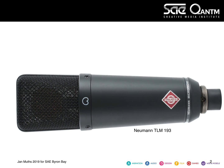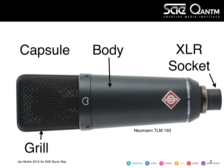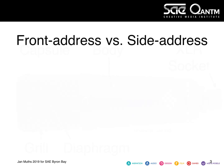Each microphone has three distinct components: the capsule, the body, and the XLR connector. The capsule houses the diaphragm, which is a very sensitive part and is commonly protected by a grille. The body houses all the internal electronic components, such as circuit boards, capacitors, resistors, and so on. The XLR socket is then used to connect a microphone lead.